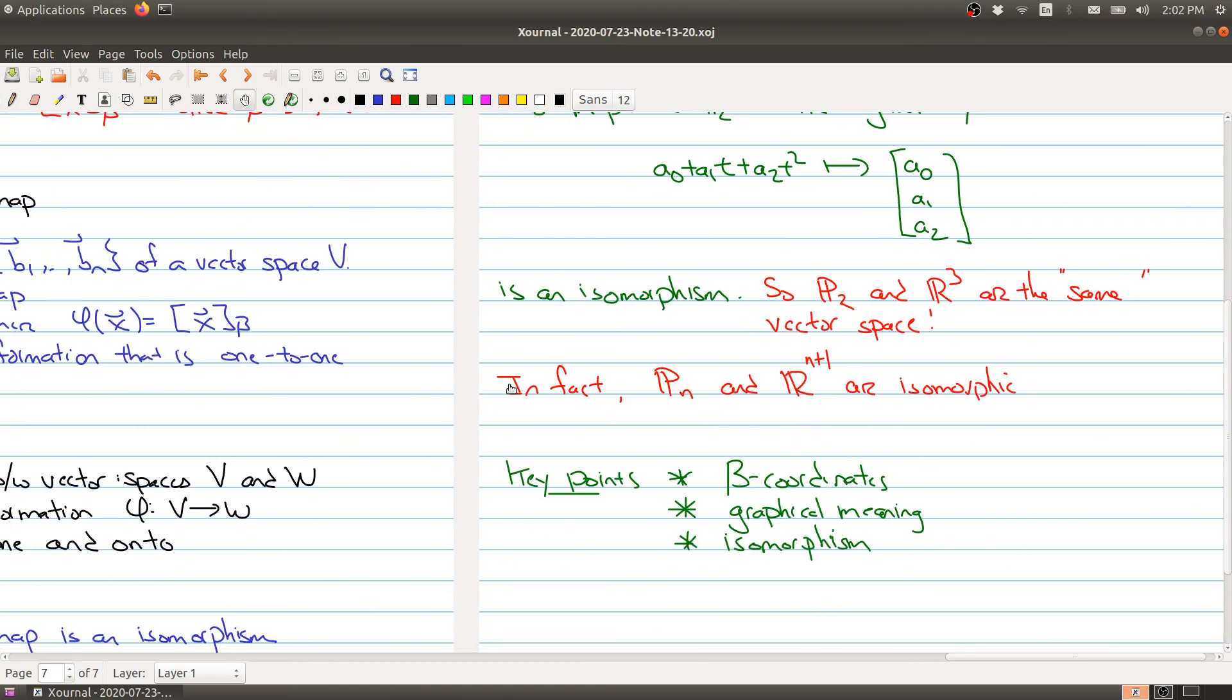Key points from today's lecture: we learned what a b coordinate is, we learned some of the graphical meaning of a b coordinate, and we've also introduced the concept of an isomorphism. We've seen some examples of things being isomorphic. So that's it for lecture 23. In the next lecture, we're going to start talking about the Gram-Schmidt process, which will lead into notions of good bases versus other bases. I'll see you at the next lecture.